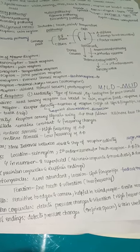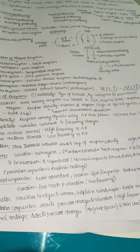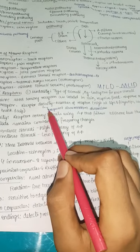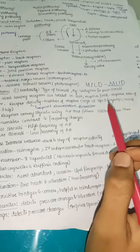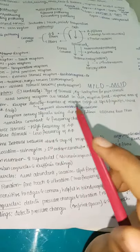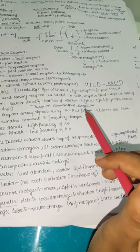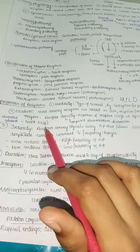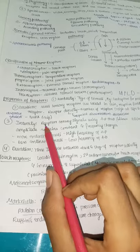Receptor density: highest number of receptors are at lips and fingertips, allowing two-point discrimination with a small distance between points. At the trunk and hips, two-point discrimination distance is very high, making it harder to discriminate. Intensity: signals are conveyed by action potentials following the all-or-none law — amplitude remains constant but frequency changes. More intense stimulus means higher frequency of action potentials.